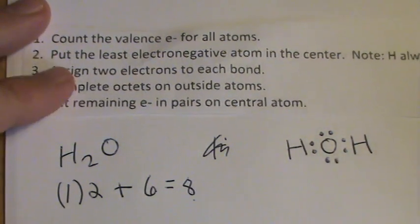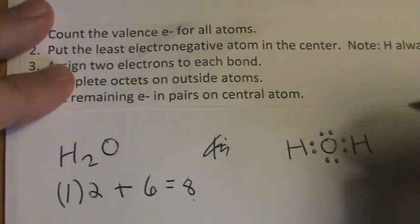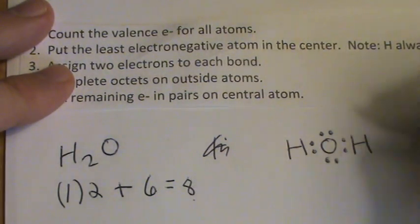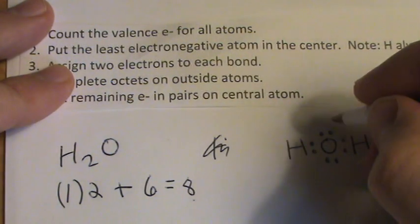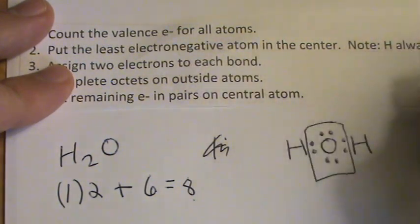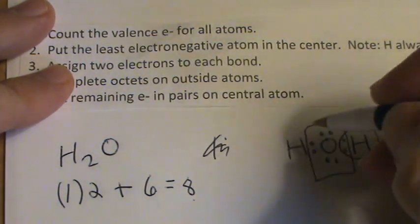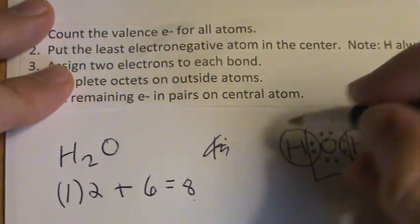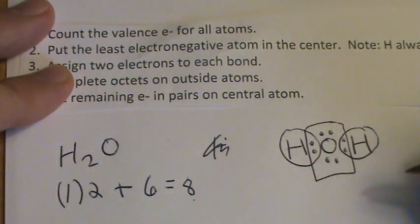So I think we're okay there. Let's go ahead and check and see if we have satisfied the outer shell. Oxygen has eight, hydrogen has two, this hydrogen also has two. You don't need to draw that on a test or quiz, but it is good to check.